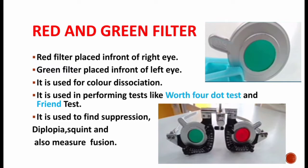It is used to find suppression, diplopia, squint, and also to measure fusion. Diplopia means double vision; squint means crossed eye, where the eyeball alignment is abnormal. When a person experiences double vision, to overcome it, he or she usually suppresses one eye to avoid the double vision. Suppression usually leads to amblyopia.